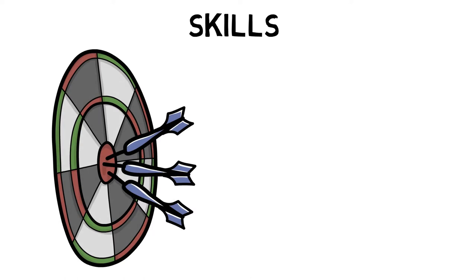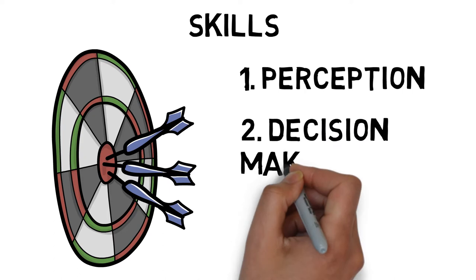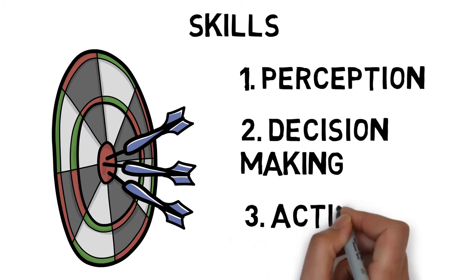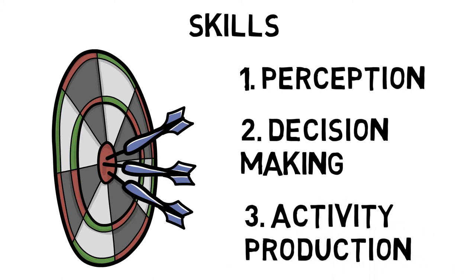There are three primary features of a skill. Perception is understanding the relevant environmental variables and situations. Decision-making is deciding what to do, when to do it, and where to do it. And activity production, which is producing organized muscular activity to generate the appropriate movement.